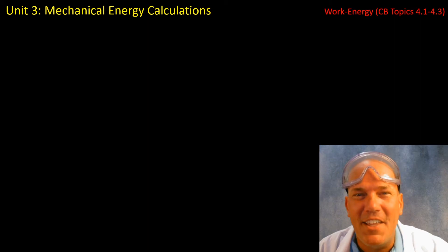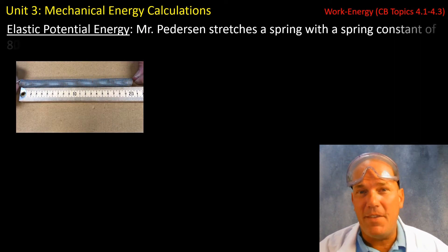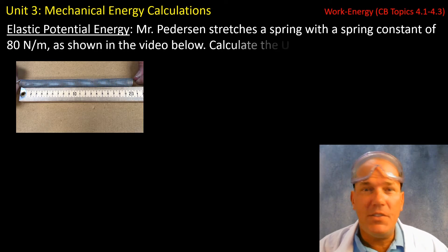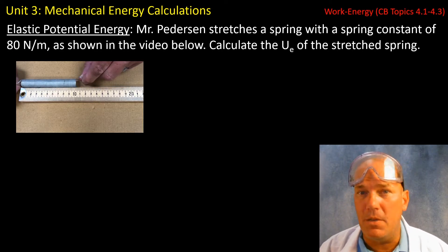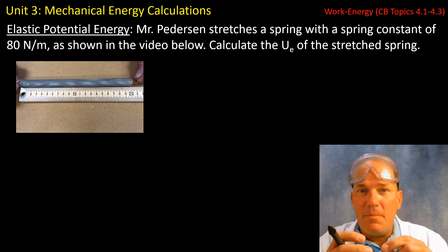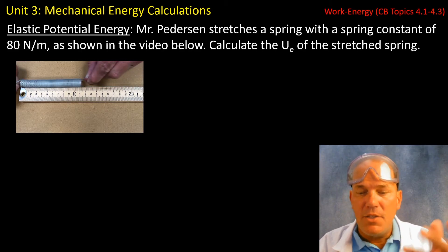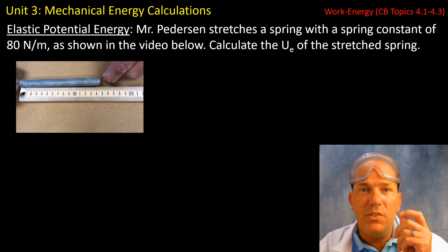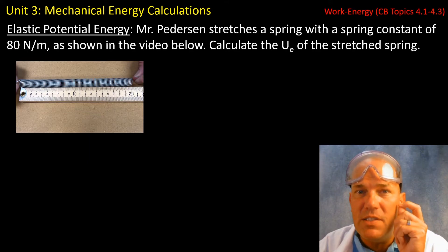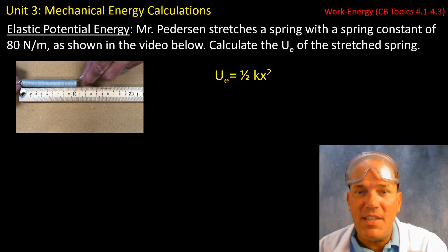In our final calculation, which deals with elastic potential energy, I have a spring. And you're given the spring constant to be 80 newtons per meter. Now, as you can see in the video, I am taking that spring and stretching it a given distance. You're asked to calculate the stored energy, which is the elastic potential energy in the spring in its stretched state.